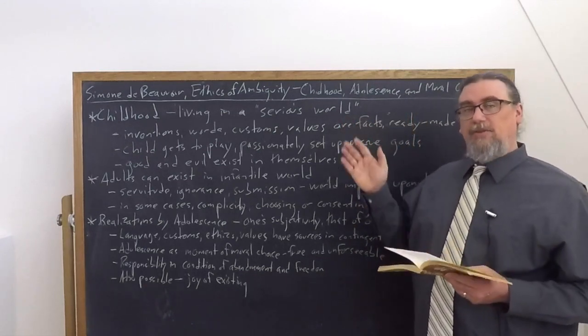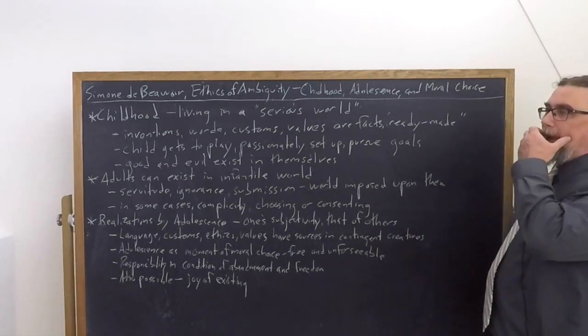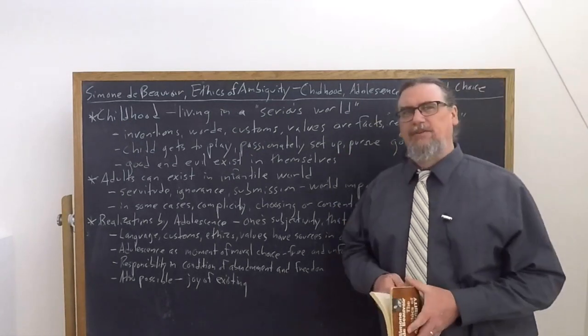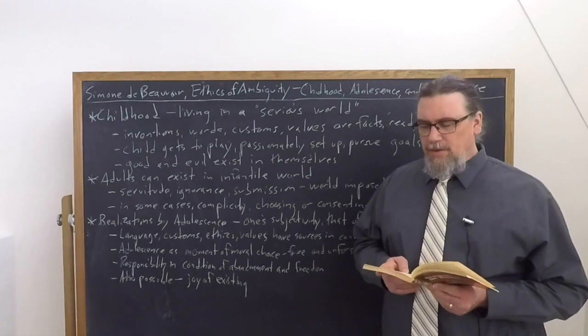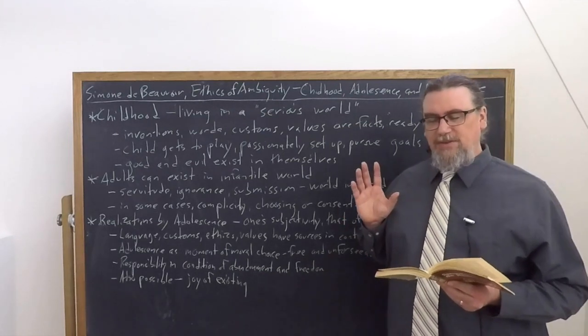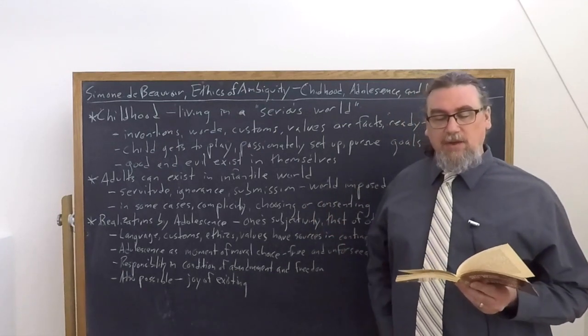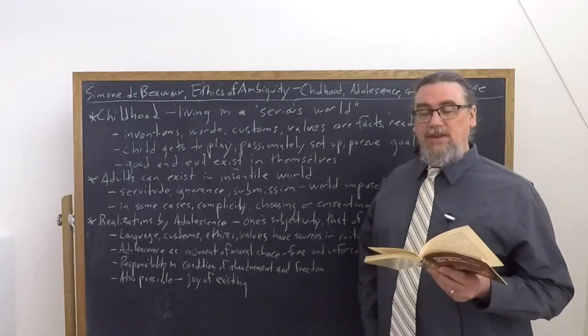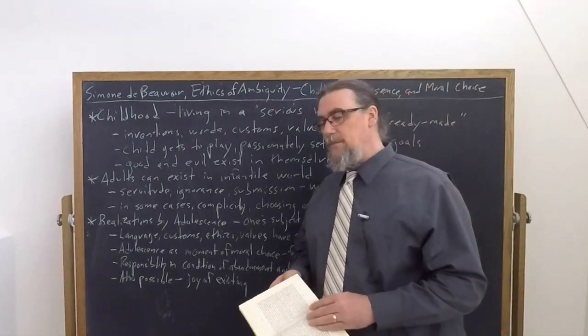She talks about the child as living in a serious world. What does this mean? She tells us that the child's situation is characterized by finding oneself cast into a universe they have not helped to establish, which has been fashioned without them, which appears as an absolute to which he can only submit. In his eyes, human inventions, words, customs, values are given facts as inevitable as the sky and the trees.